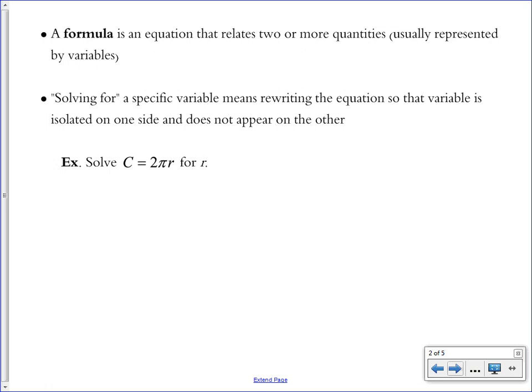So there's an example given here. Solve C equals 2 pi r for the variable r. This is the circumference formula, and we're not actually going to be able to figure out what r is. We don't have enough information here. All we're asked to do is isolate the r on one side of the equation. So I'll rewrite this equation.